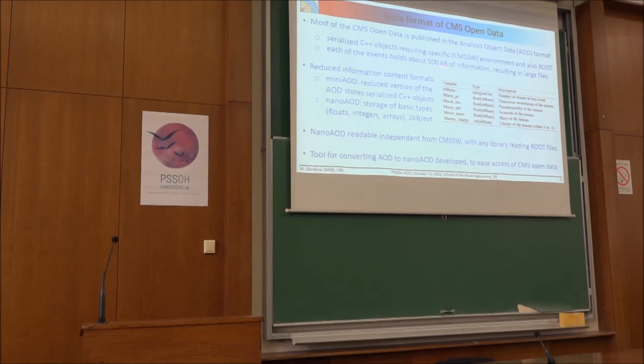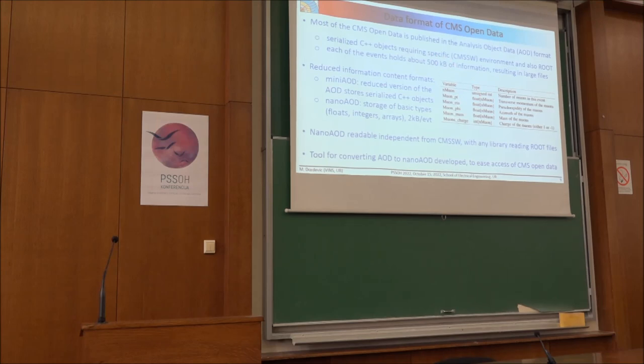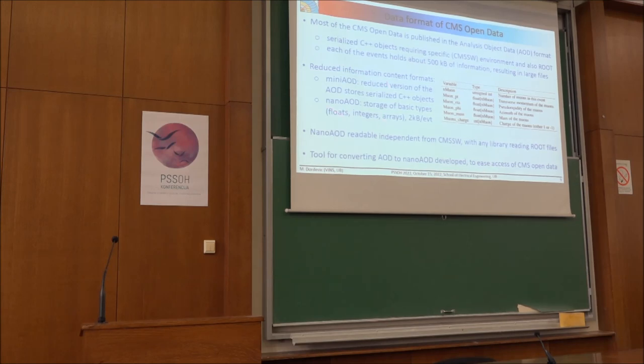However, this information is quite huge. It's about 500 kilobytes of information per event. So these files are large. That's why in CMS collaboration and also what is released to the public, there are the reduced event contents, such as this mini-AOD, which is the reduced version of the AOD. And there is also nano-AOD.